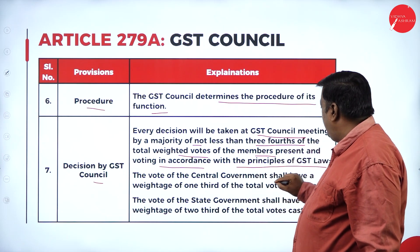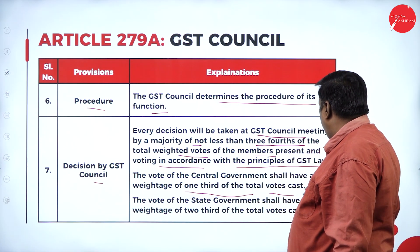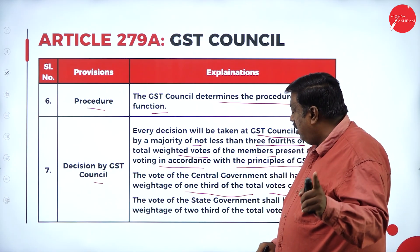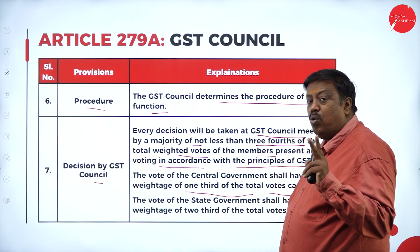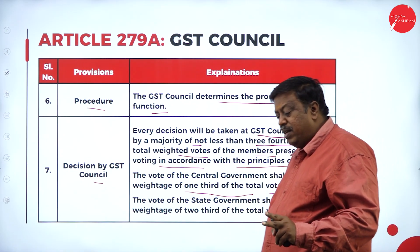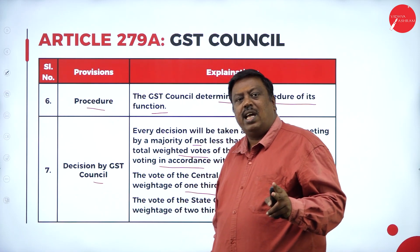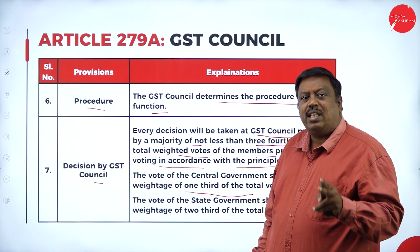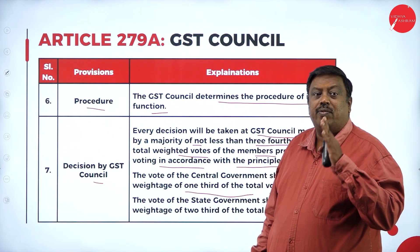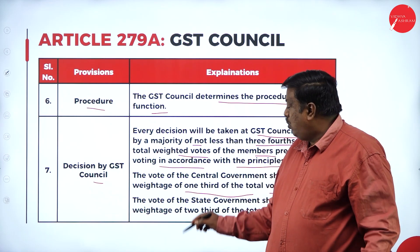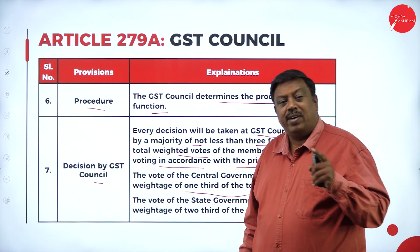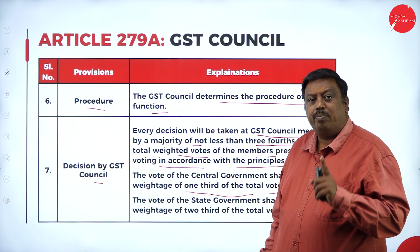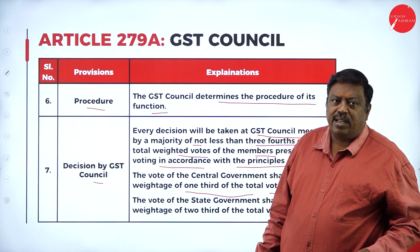The vote of the central government shall have a weightage of one-third of the total votes cast, and the state governments collectively have a weightage of two-thirds. Based on this distribution, the overall total vote weightage of three-fourths is calculated from the one-third and two-thirds shares, determining how many members must be present to take major decisions affecting the nation's economy and growth.